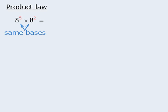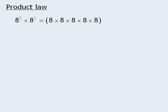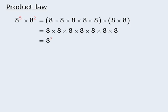Notice that in this product, the two bases are the same. Now to find this product, we can first rewrite 8 to the power of 5, and then rewrite 8 to the power of 2. At this point, we can combine both pieces to get the product of 7 eighths, which we can rewrite as 8 to the power of 7. So 8 to the power of 5 times 8 to the power of 2 is equal to 8 to the power of 7.